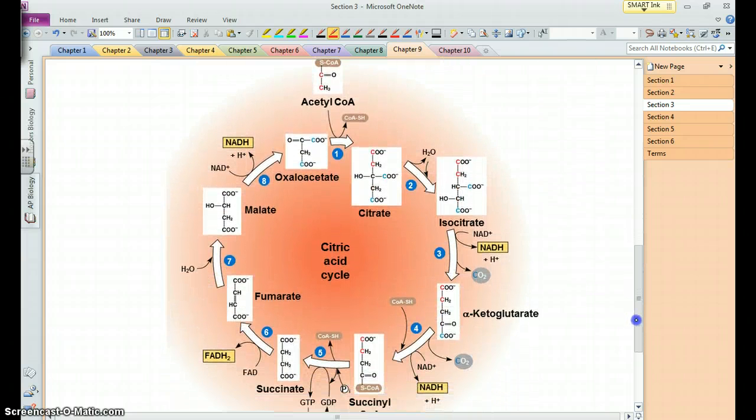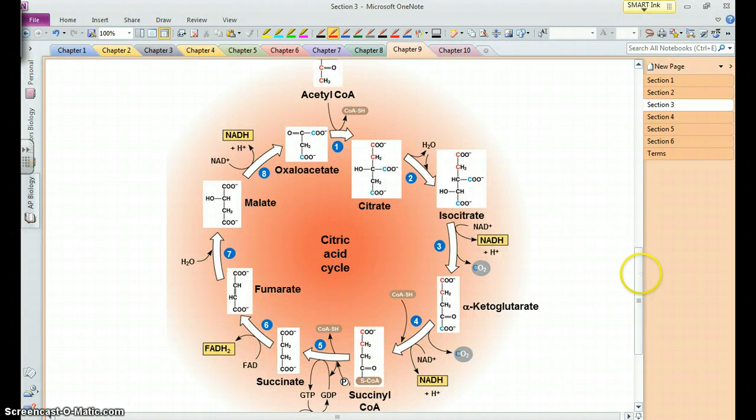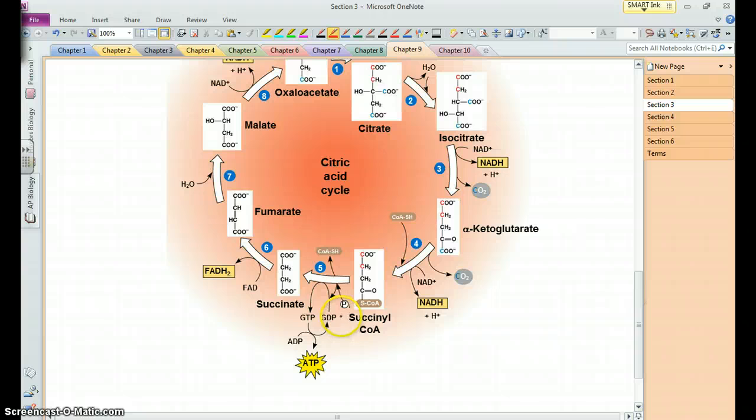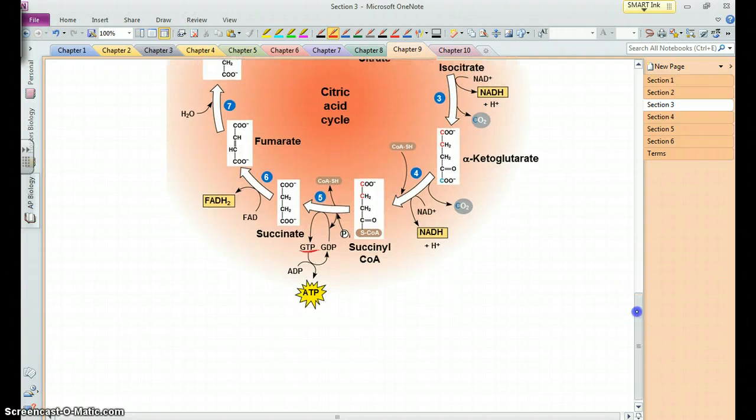And there are the details of the citric acid cycle, all the different intermediate compounds and steps, which again we won't worry about. Now here you can see the substrate-level phosphorylation. ADP is converted into ATP. The phosphate is stripped off of this compound called GDP.